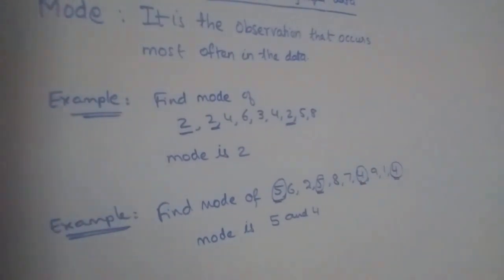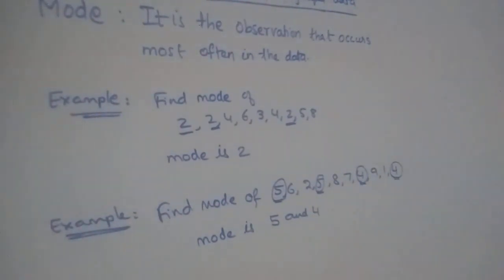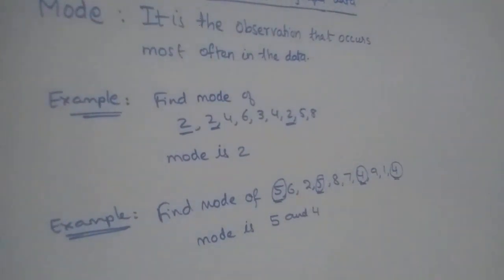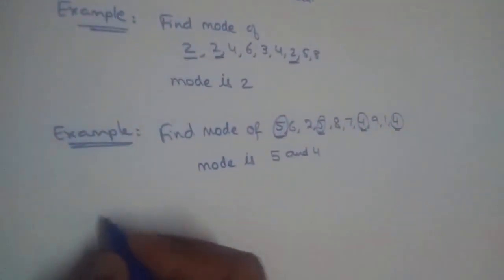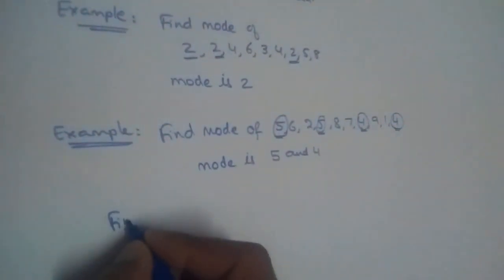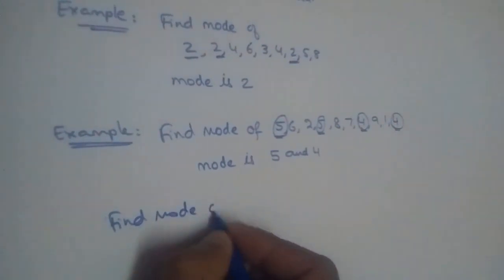Observations can have more than one mode, or there can be no mode at all. Let us take an example of that.